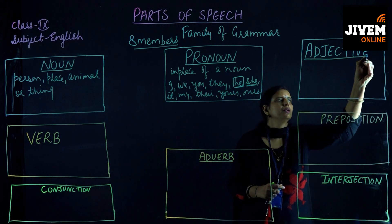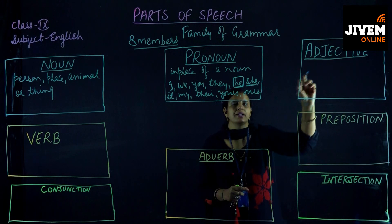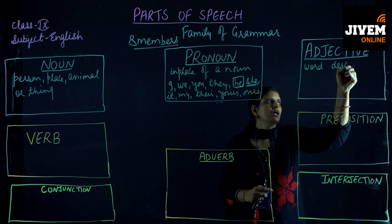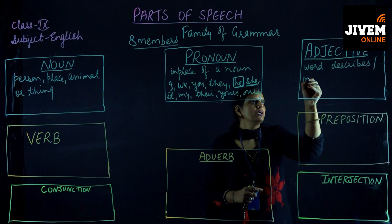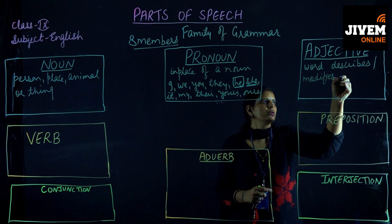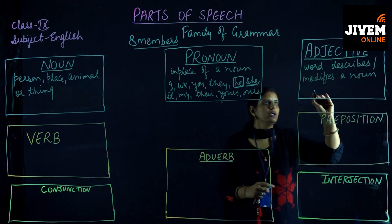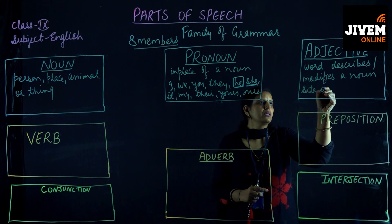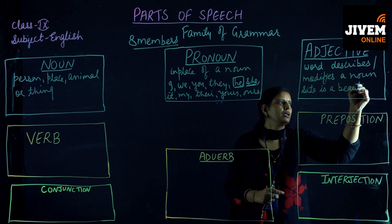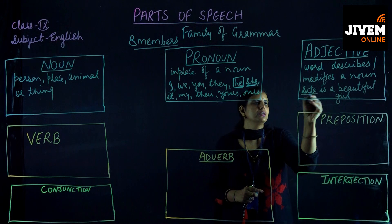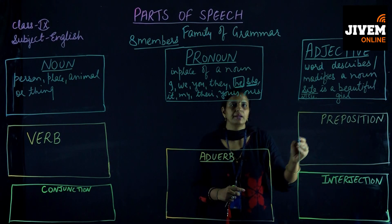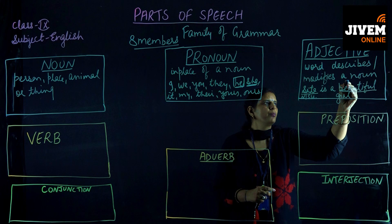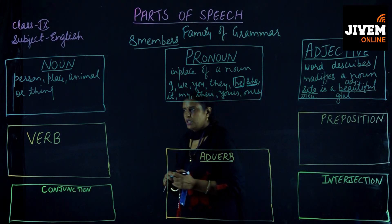The third member of the family is adjective. What do you mean by an adjective? An adjective is a word which describes or modifies a noun or pronoun. For example: 'Sita is a beautiful girl.' In this sentence, Sita is the noun, and 'beautiful' is a quality of Sita — it modifies the noun. So 'beautiful' is the adjective.